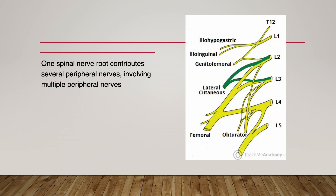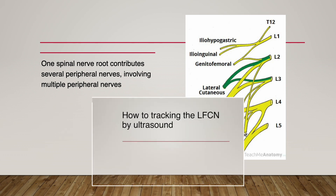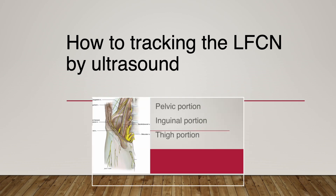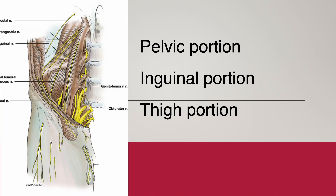If you have basic neuroanatomic knowledge, this is easy to understand: one spinal nerve root contributes to several peripheral nerves. Next, I'll talk about the detailed anatomy of the lateral femoral cutaneous nerve and its ultrasound features. I'll divide the lateral femoral cutaneous nerve into pelvic, inguinal, and thigh portions.